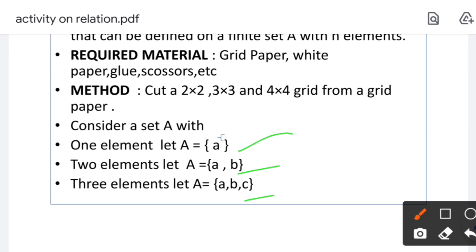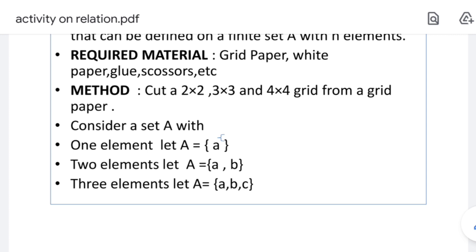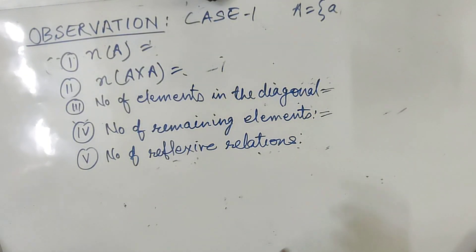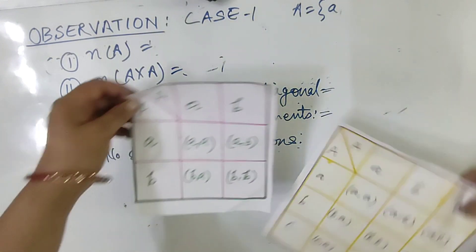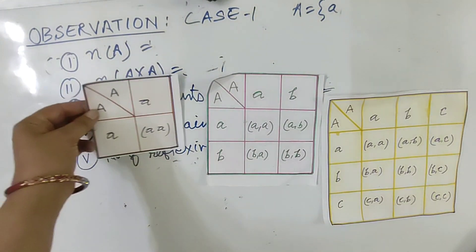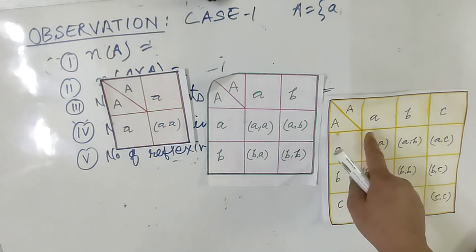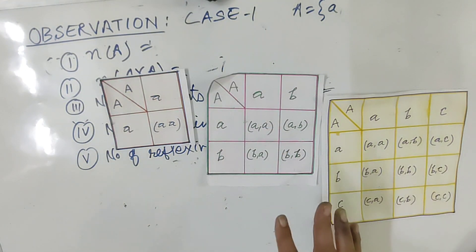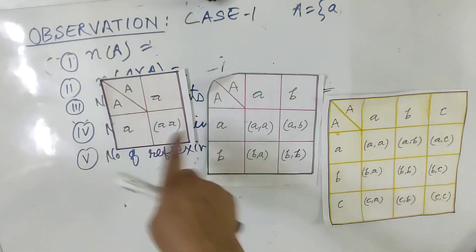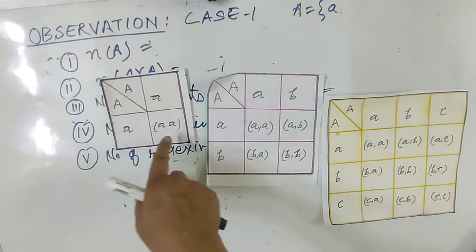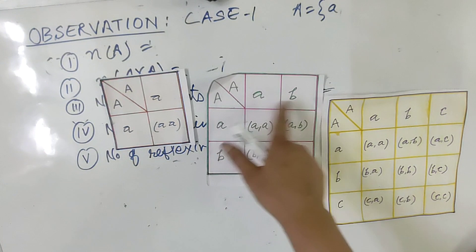So now let's go for observation. I am taking here three cases. I have made three grids. These are the three grids — a grid taking one element, then taking two elements, then I have taken three elements. If I take one element, I have made the grid with squares. This is element A and this is the diagonal element, then A and B, and A, B, C.